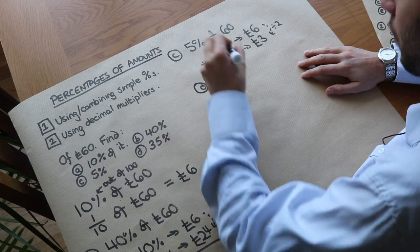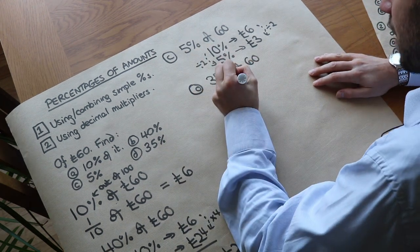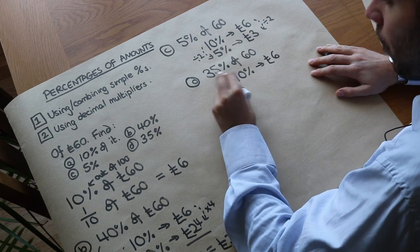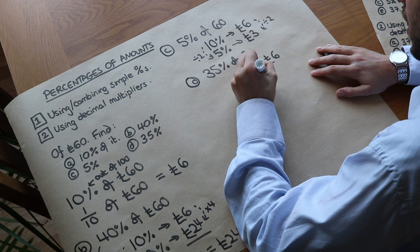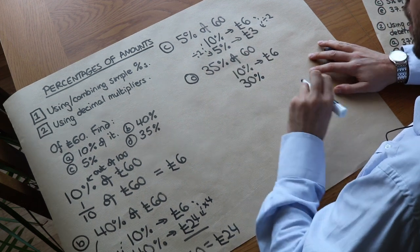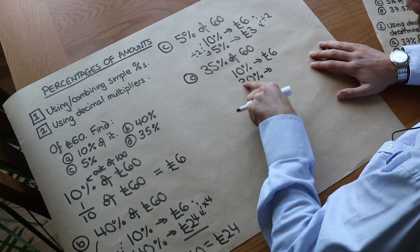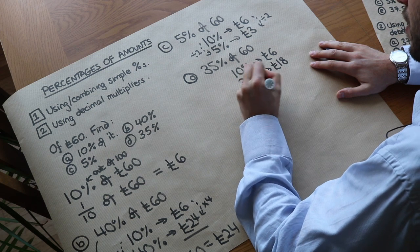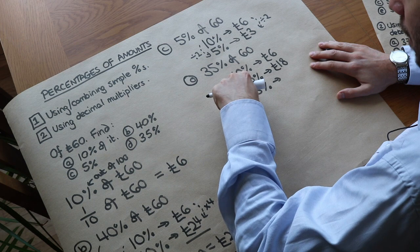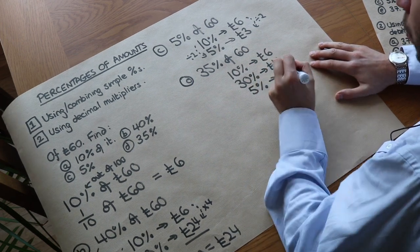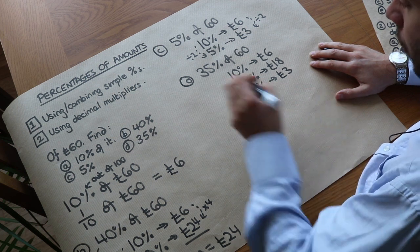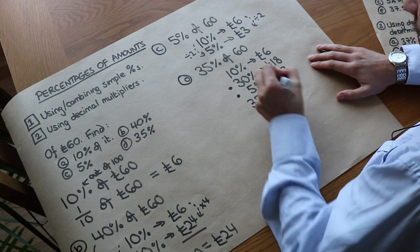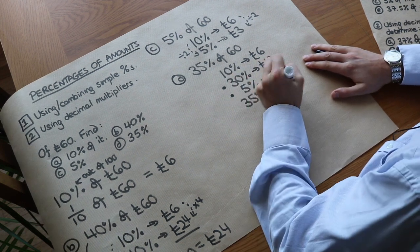What about 35% of £60? We start with 10%, which equals £6. We can then work out 30%, gradually building up to 35%. Thirty-five percent is 30% plus an extra 5%. Thirty percent is three times as much as 10%, so that's 3 × £6 = £18. We already know 5% is £3 — that's half of the 10% value. Now combine the ones needed: 30% and 5% add up to 35%, so £18 + £3 = £21.